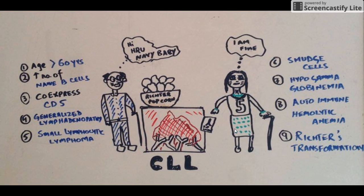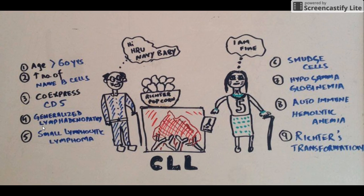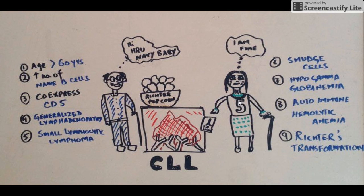Initially, CLL is an asymptomatic condition, shown by the lady saying 'I'm fine' — no symptoms. But with time it tends to present with different symptoms. These B lymphocytes go to the lymph nodes and sit there, leading to generalized lymphadenopathy. This is also called small lymphocytic lymphoma — a lymphoma making a mass — shown by the beaded necklace and bracelet of the old lady.